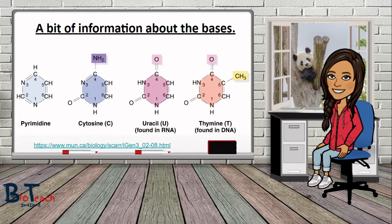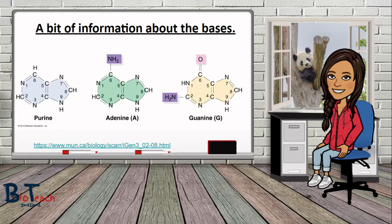We should learn about the structure of the bases, as it's important for understanding how bonding between them occurs. There are two groups of bases: pyrimidines and purines. Pyrimidines are single ring structures — DNA contains cytosine and thymine as pyrimidines, while RNA contains cytosine and uracil. Purines are double-ringed base structures, and both DNA and RNA contain the purines adenine and guanine. Later in the video I'll explain how base pairing between the bases occurs.